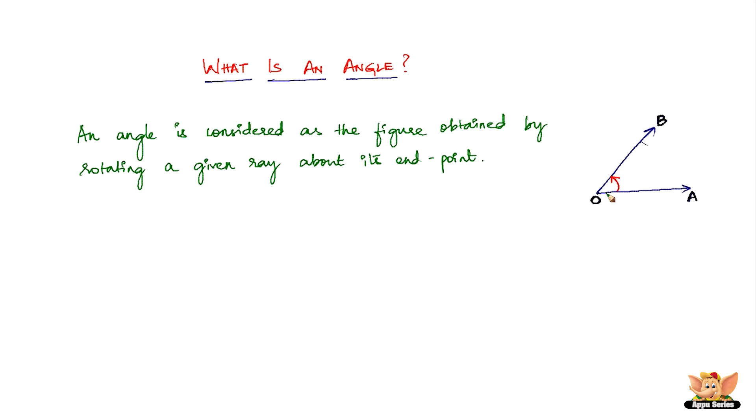The rotation in a particular direction is not really important. For example, if this is ray OA, it could have also been rotated clockwise and we could have ended up like this.